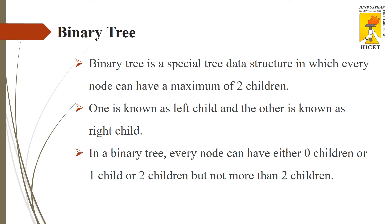What is a binary tree? A binary tree is a special data structure in which every node can have a maximum of two children. A node can have at most two children — one is the left child and another one is the right child. So in a binary tree, every node can have either 0, 1, or 2 children, but a node can't have more than 2 children.